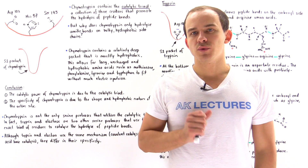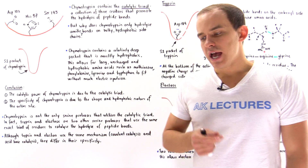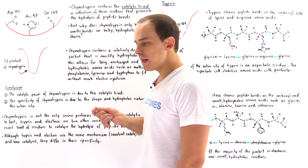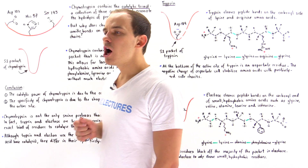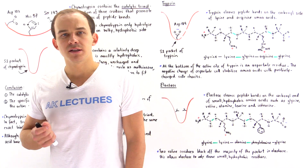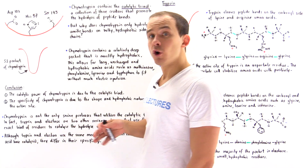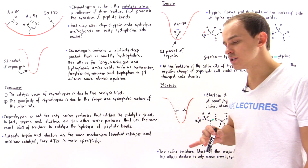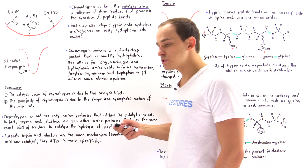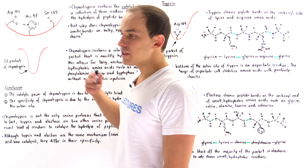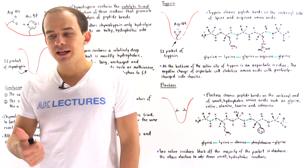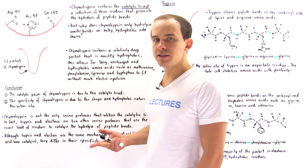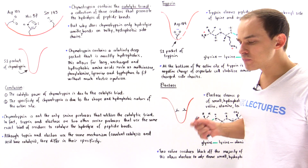Chymotrypsin is a serine protease, and it has the ability to catalyze the cleavage of peptide bonds on the carboxyl end of large hydrophobic nonpolar amino acids. For instance, chymotrypsin cleaves at the carboxyl end of methionine, phenylalanine, tyrosine, as well as tryptophan.